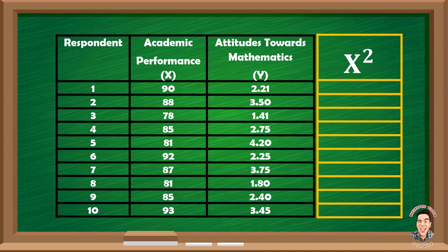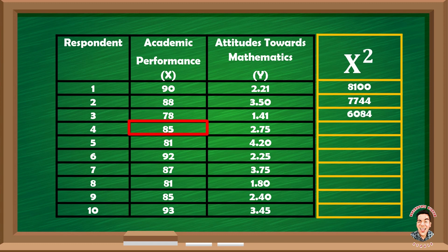Squaring the individual items in the academic performance column, we have: 90 squared equals 8,100; 88 squared equals 7,744; 78 squared equals 6,084; 85 squared equals 7,225; and 81 squared equals 6,561.